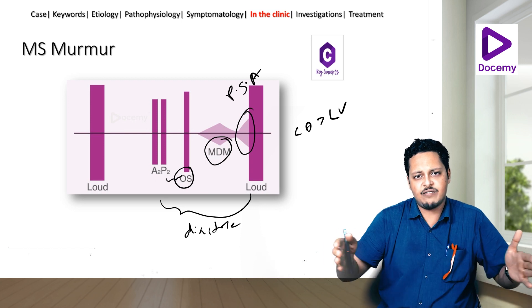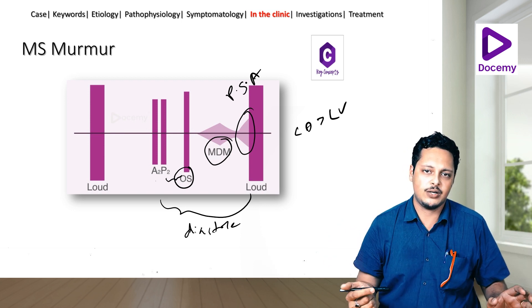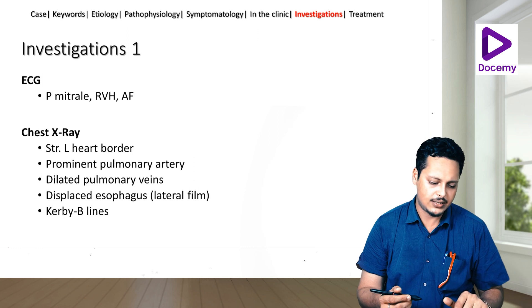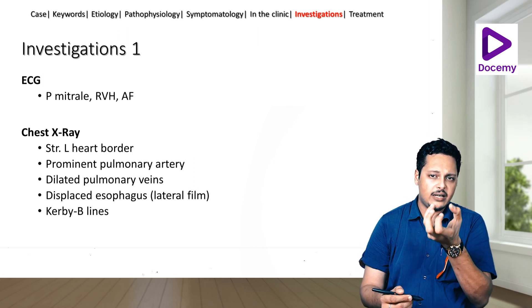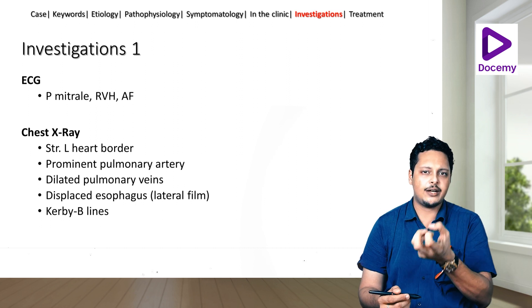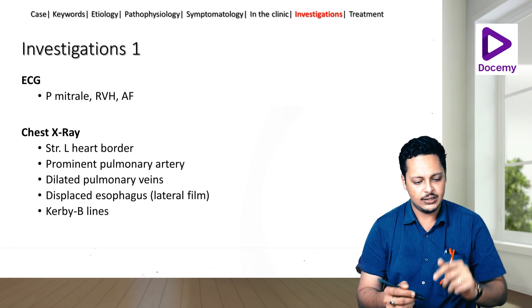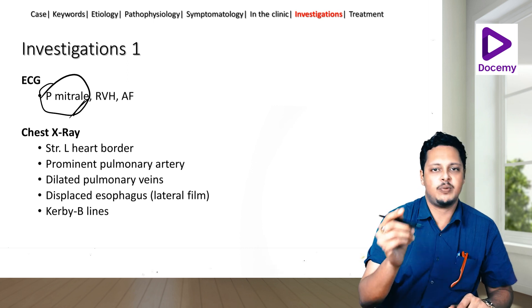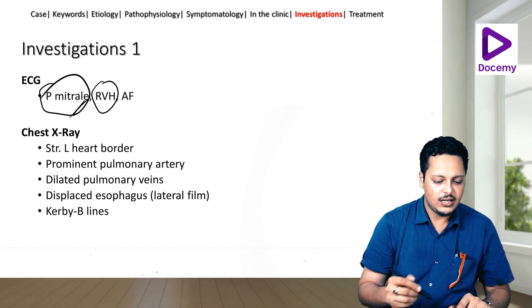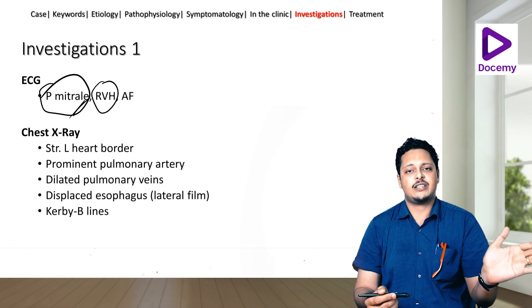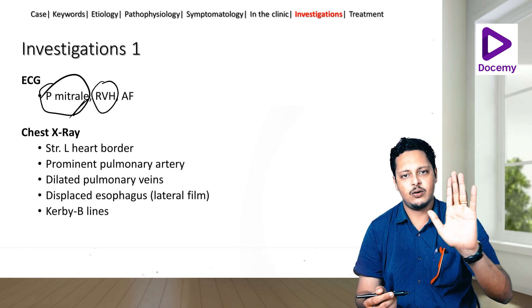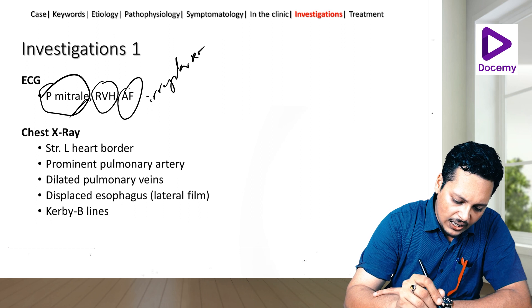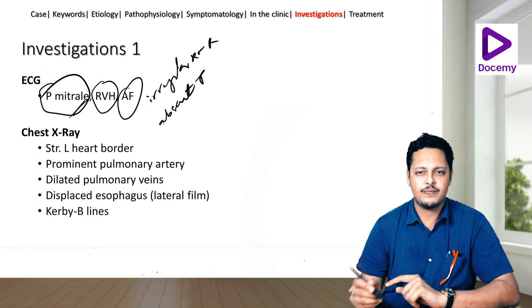The duration of the mid-diastolic murmur indicates the severity of mitral stenosis. On ECG — the most primordial cardiovascular investigation — P mitrale indicates LA enlargement. RVH indicates secondary effects of pulmonary venous congestion. AF appears as an irregular RR interval with absent P waves.